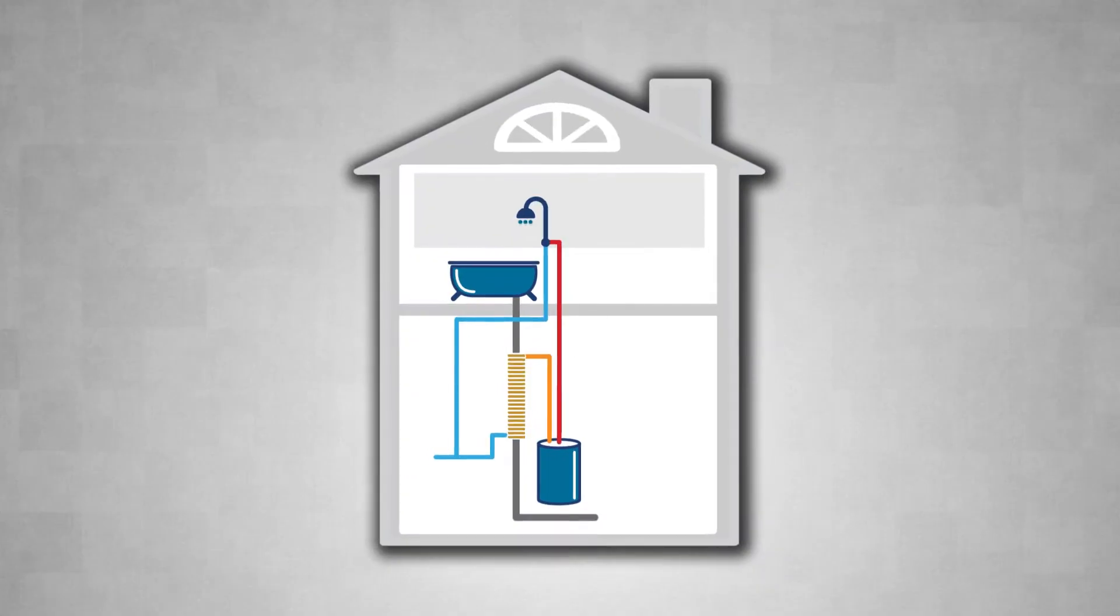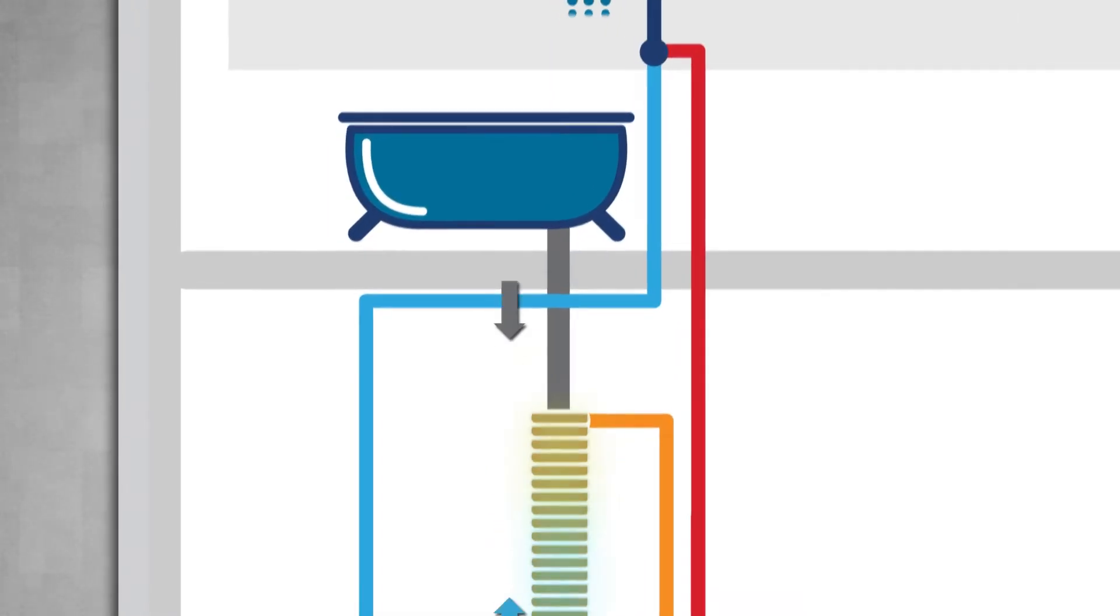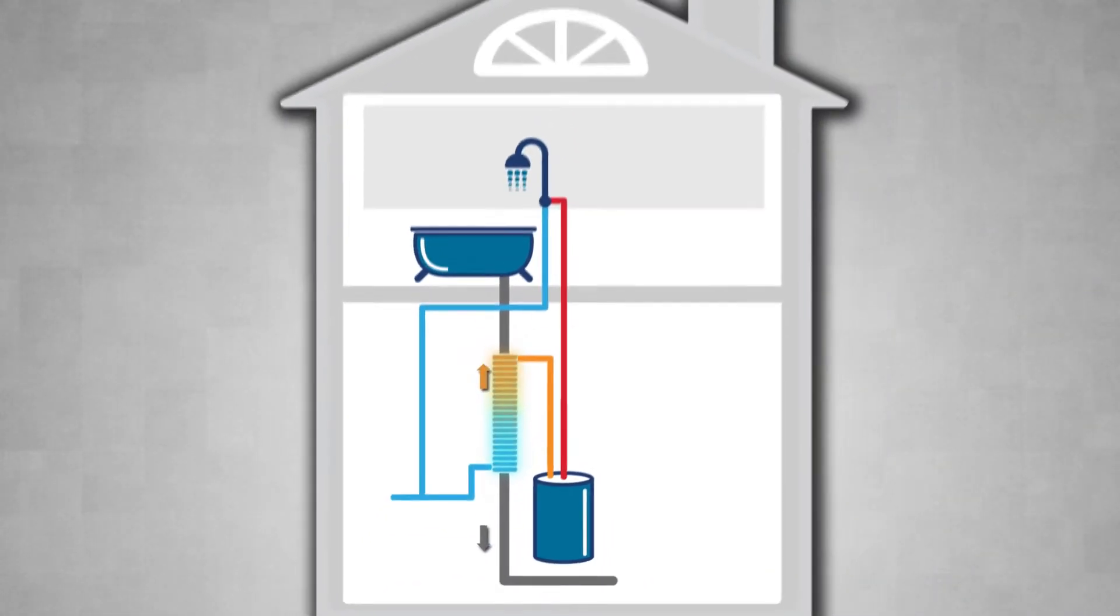So how does it work? 90% of the energy from your shower goes down the drain. Thermal drain captures this waste energy and uses it to preheat cold water.